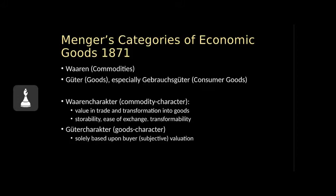The character of commodities comes from their transformability from one raw state to a more refined state, such as we would find with wheat being translated into flour and then into any number of consumer products, as well as the ease of exchange in trade between primary production and end processes, and the storability — all important characters of commodities. Goods character, on the other hand, is solely based on the assessment by the buyer, a subjective evaluation of what that consumer good will do for the buyer.